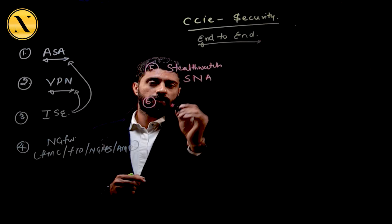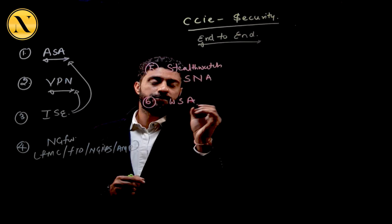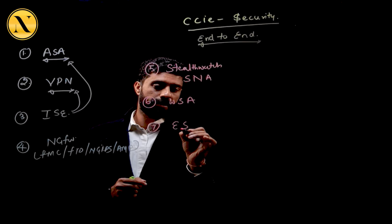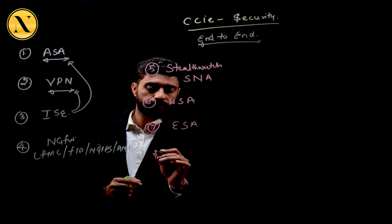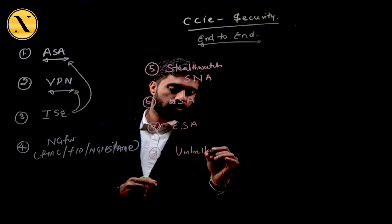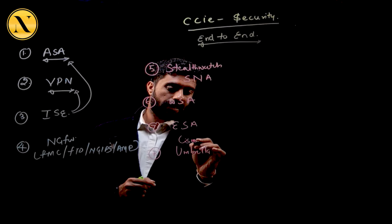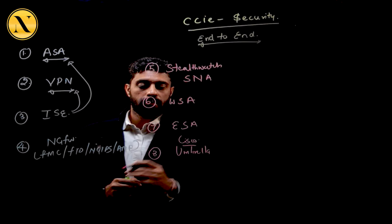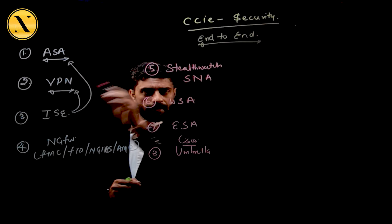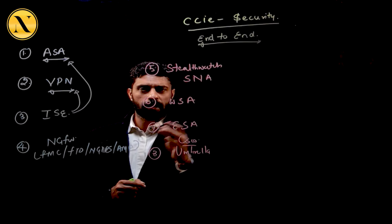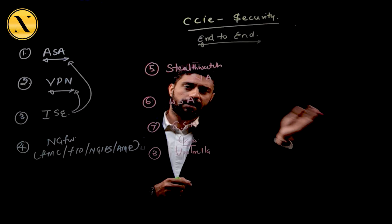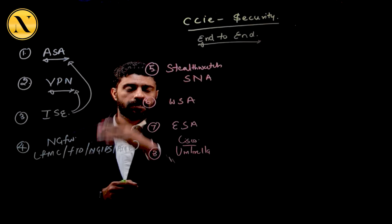The sixth module is WSA — Web Security Appliances. The seventh is Email Security Appliances. The eighth will cover theoretical knowledge on Cisco Umbrella, which has been introduced into the curriculum. Throughout all eight modules, topics related to routing and infrastructure security such as NTP, DHCP, and DNS will be integrated as part of the content.